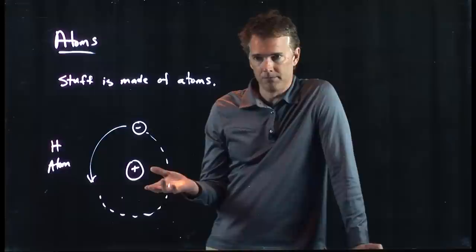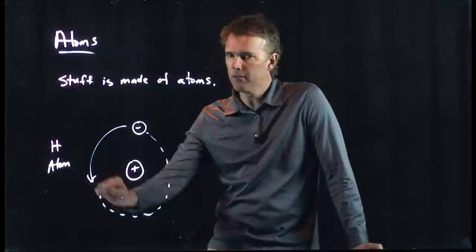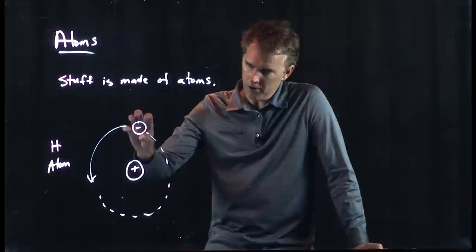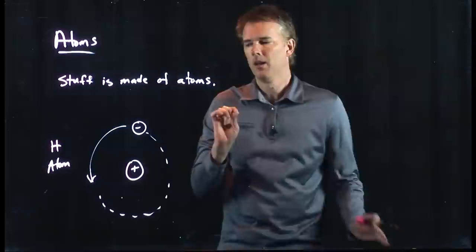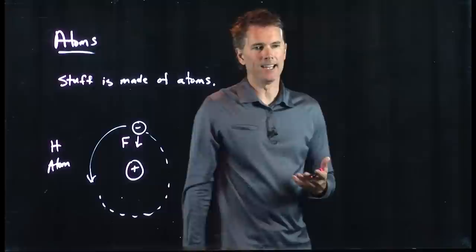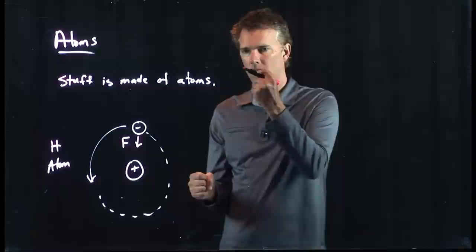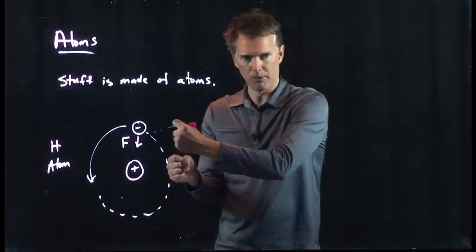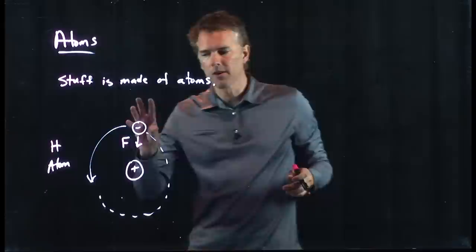If something is moving around in a circle, there has to be a force. Circular motion tells us there must be a force keeping this thing moving in the circle. When it was the Earth going around the Sun, it was gravity keeping the Earth in its orbit. Here it is a different force — the electromagnetic force. Likes repel, opposites attract. The electron is bound to the proton because of this force holding it there.